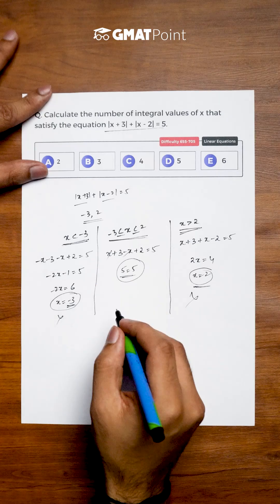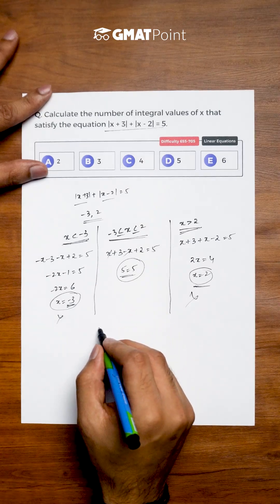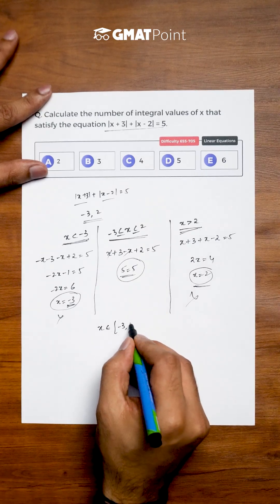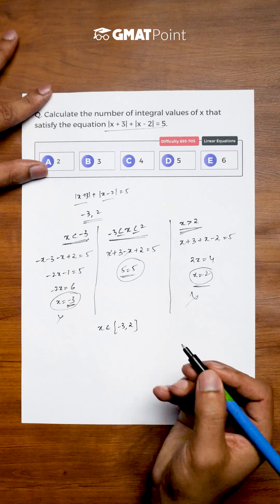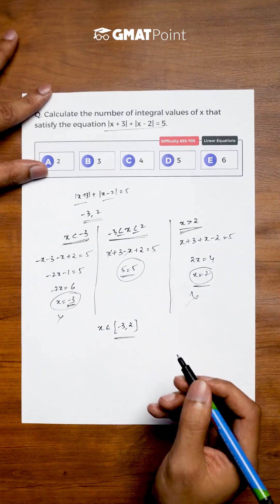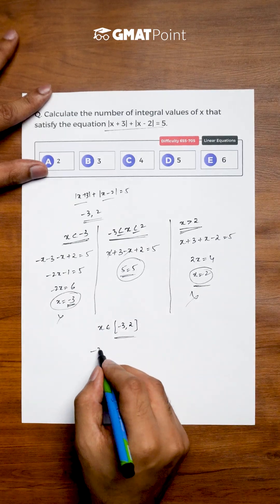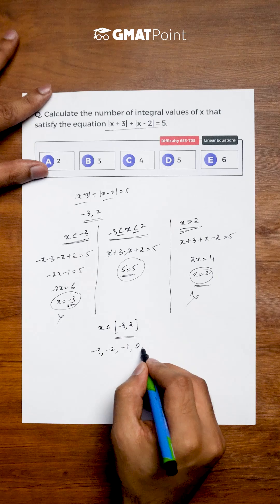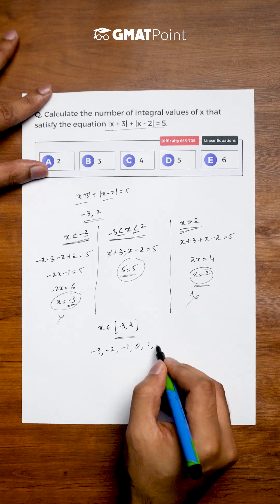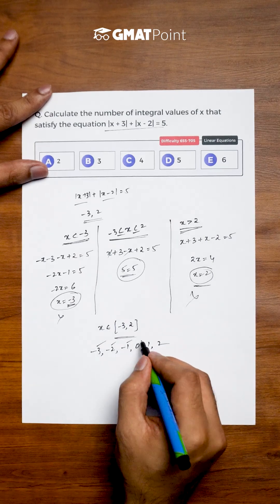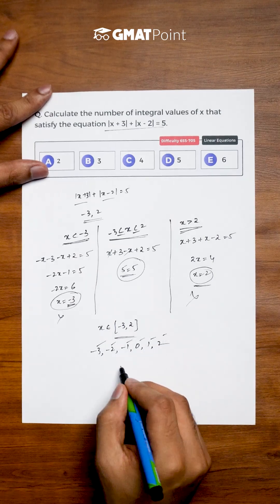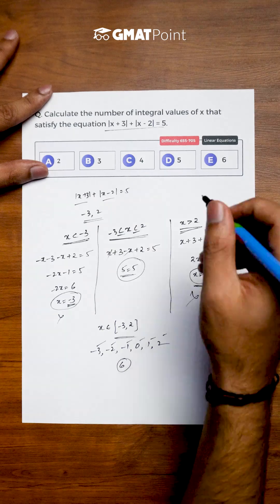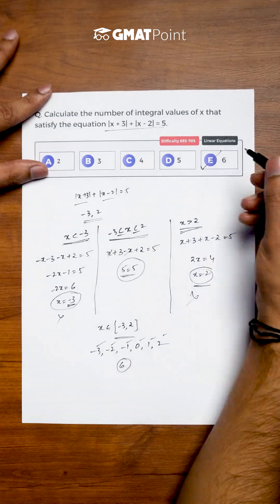The only values of x that satisfy the equation are those belonging to the interval [-3, 2]. The integers in this range are -3, -2, -1, 0, 1, and 2. In total there are 6 integers that satisfy this equation, and the correct answer is option E.